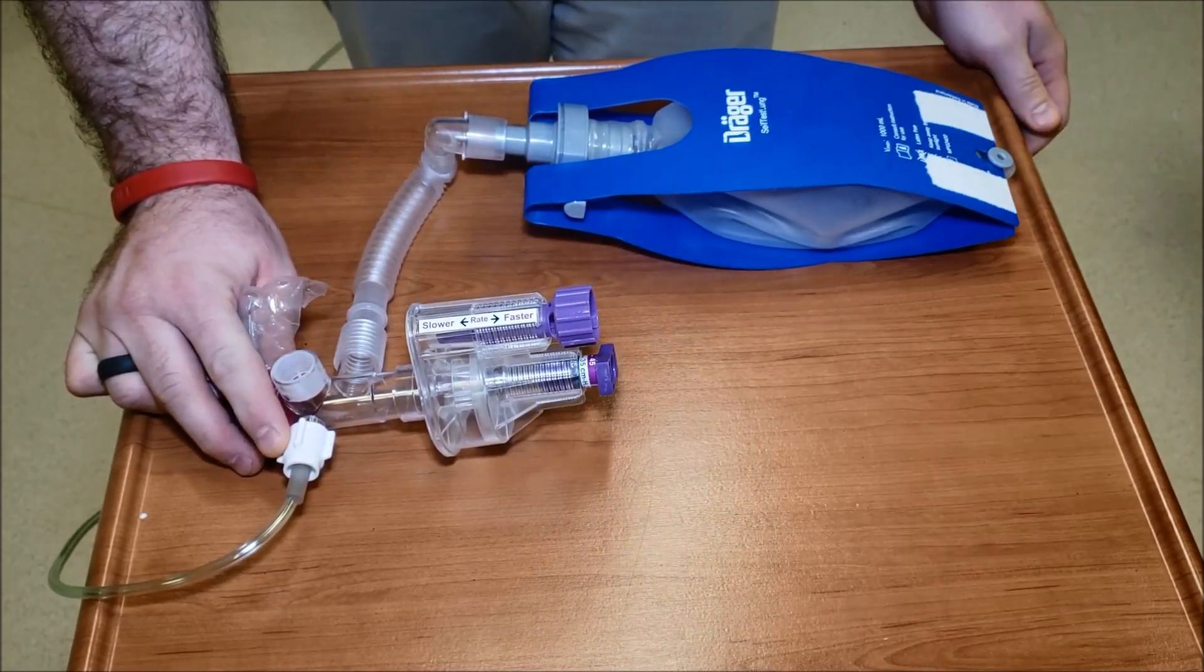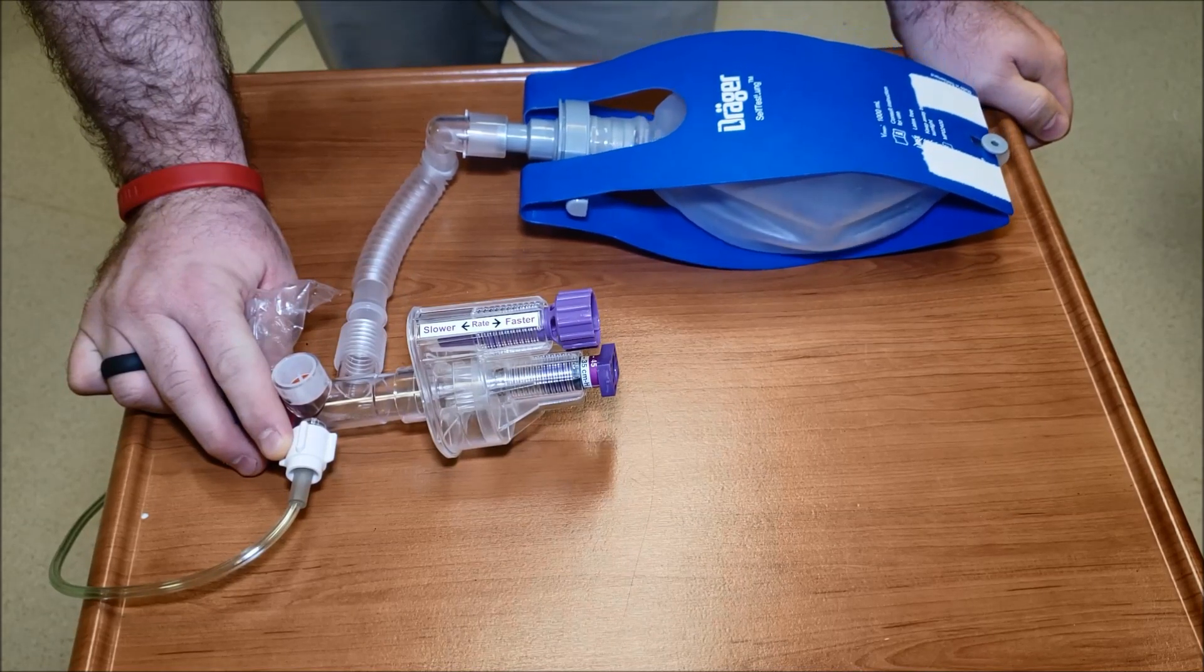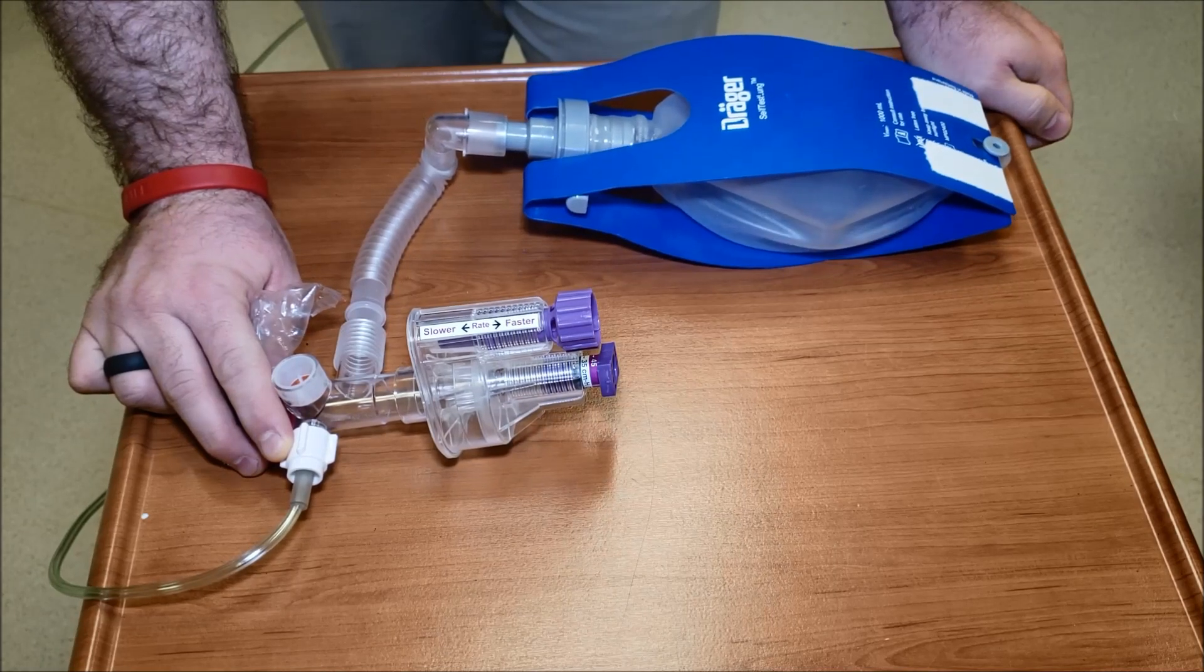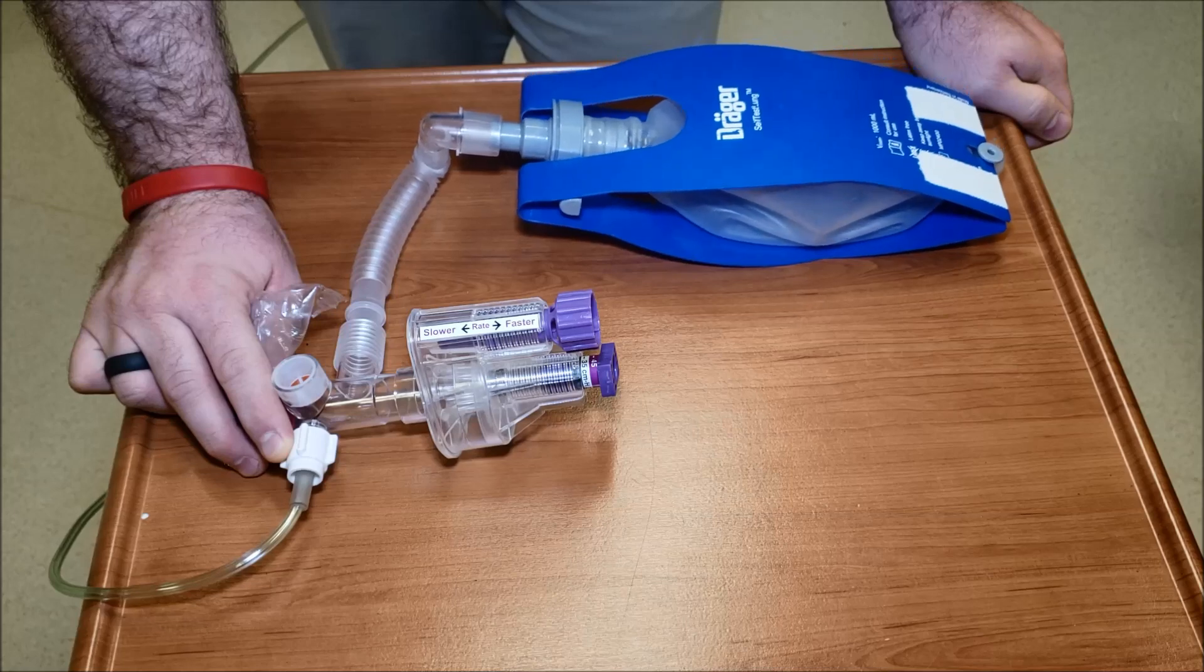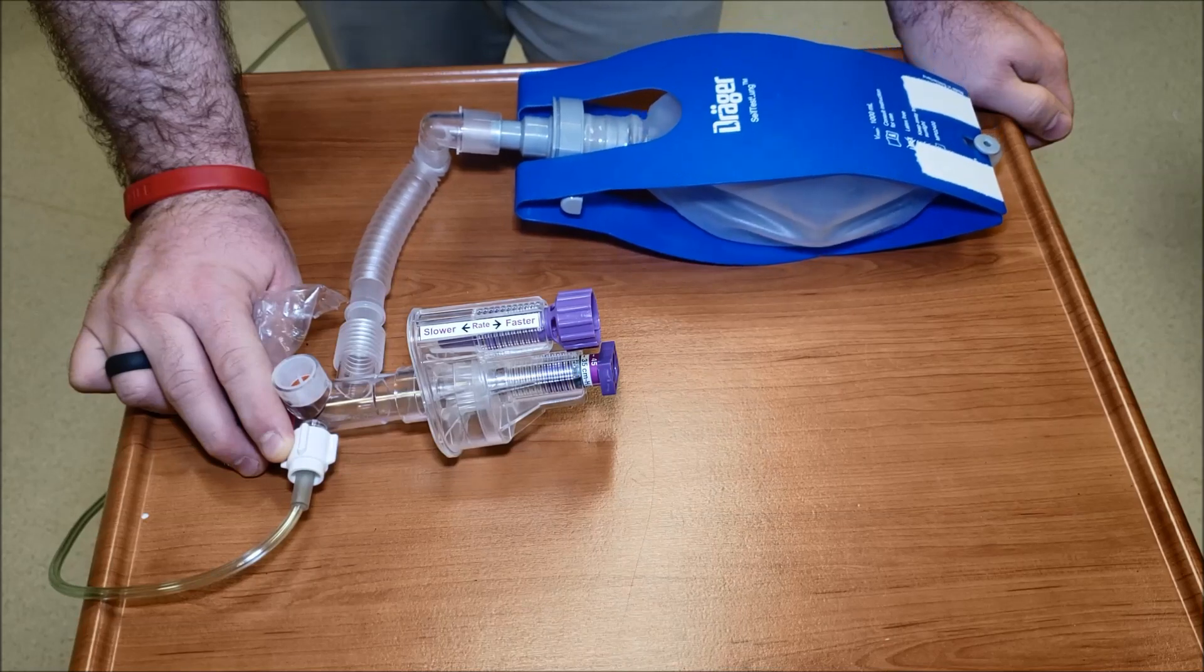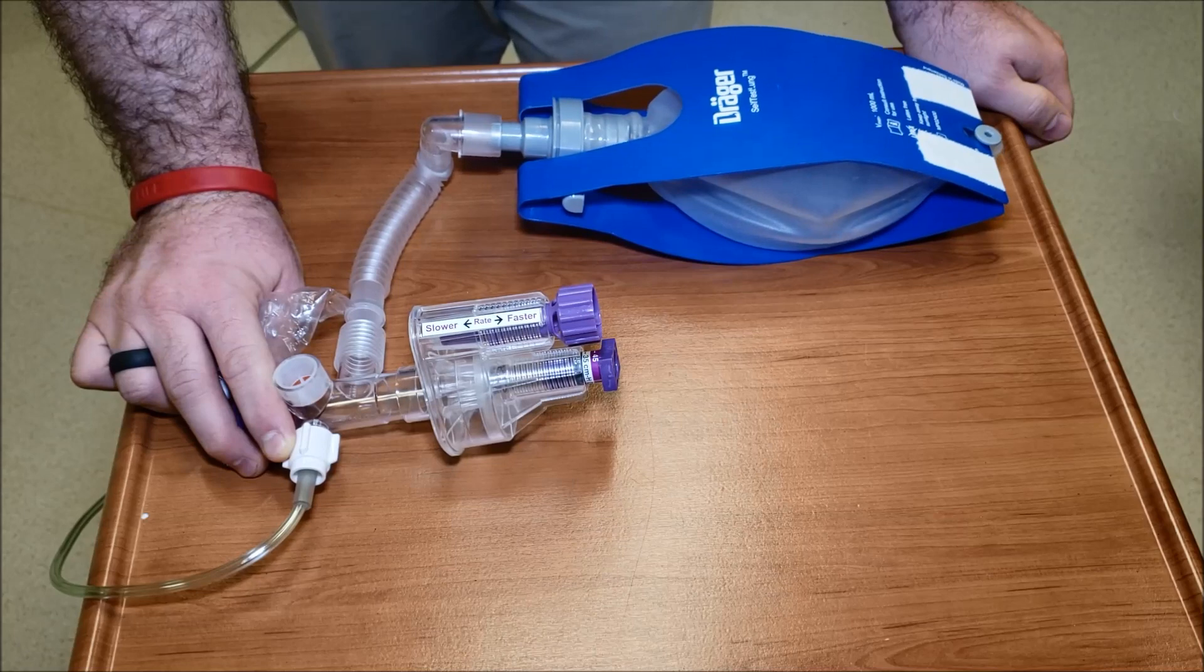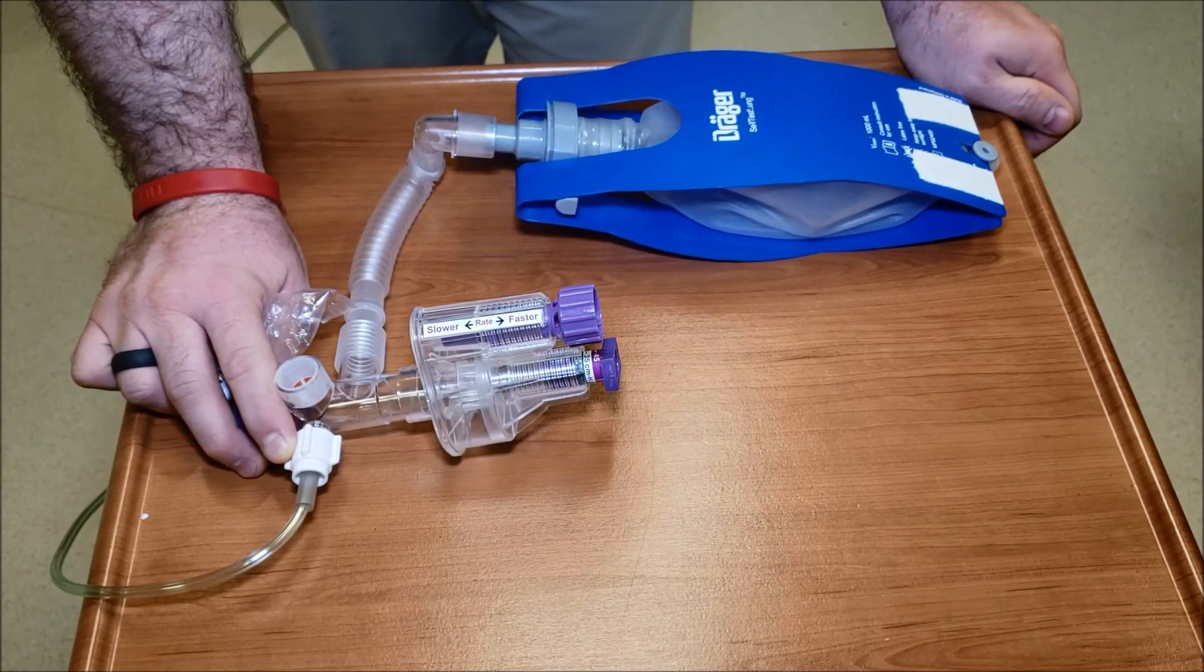Let me see, do a breath: one one thousand, two one thousand, three one thousand, four one thousand, five one thousand, six one thousand. So about every six seconds, ten breaths per minute. And that's really good. I really like that rate. It's good for any kind of ventilation you have going on.